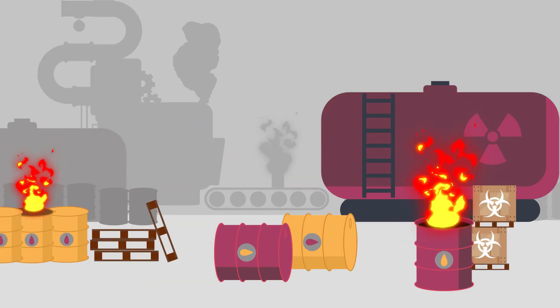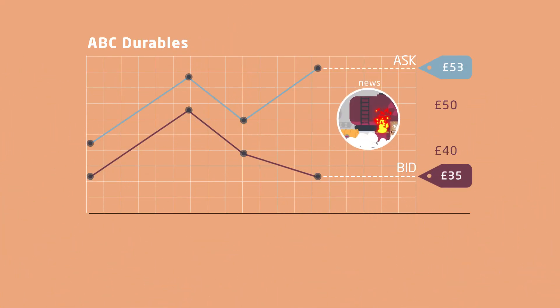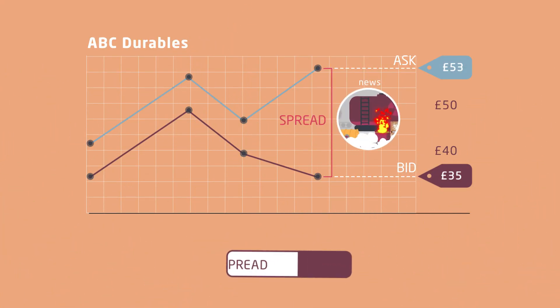However, if bad news hits ABC Durables, there will be less competition for its shares, and its spread may widen.